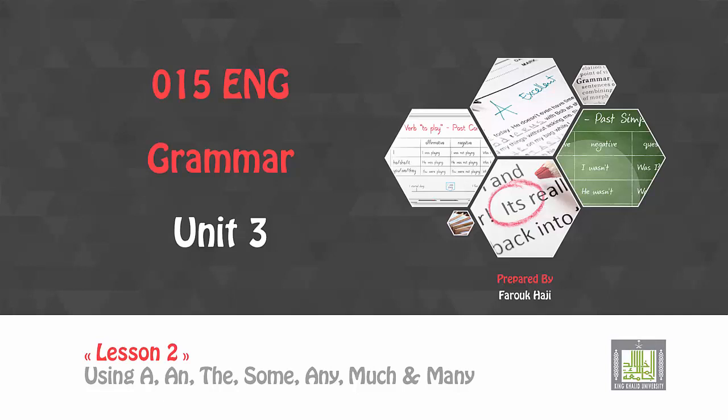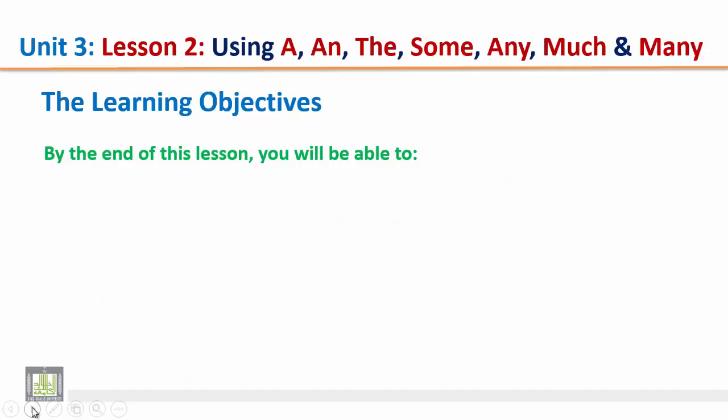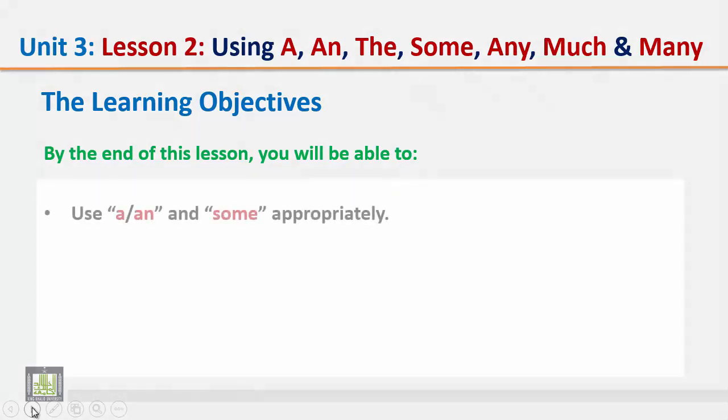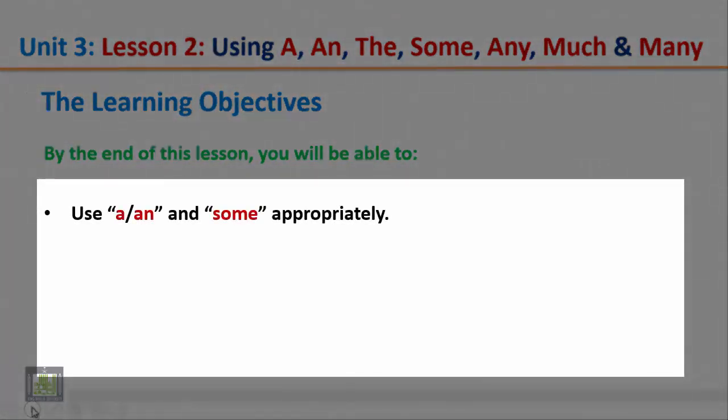Bismillah ar-rahman ar-rahim. Grammar Unit 3, Lesson 2: Using a, and, the, some, any, much, and many. The learning objectives: by the end of this lesson you will be able to use a, an, and some appropriately.